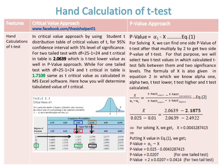In the p-value approach, for the one-tailed test with degree of freedom equal to 25 minus 1 equal to 24, t-critical in the table is 1.7109 — the same t-critical value is also calculated in MS Excel software.